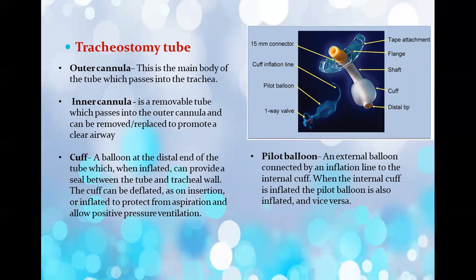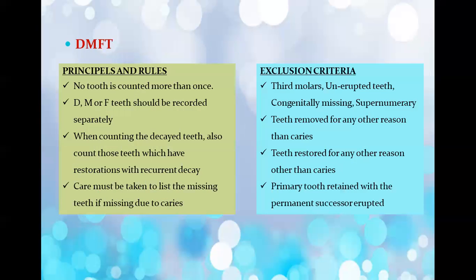Other parts of the tracheostomy tube include the outer cannula, which is the main body of the tube passing into the trachea. The inner cannula is a removable tube that passes into the outer cannula and can be removed or replaced to promote a clear airway. The pilot balloon is an external balloon connected via an inflation line to the internal cuff — when the internal cuff is inflated, the pilot balloon is also inflated, and vice versa.